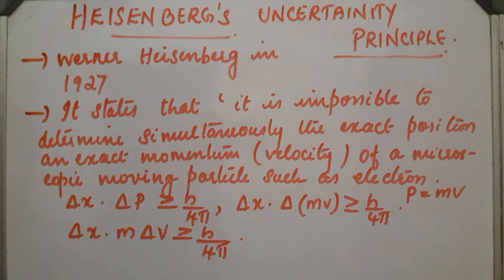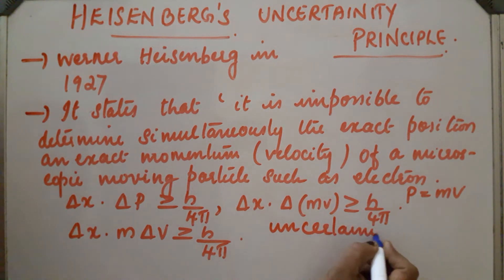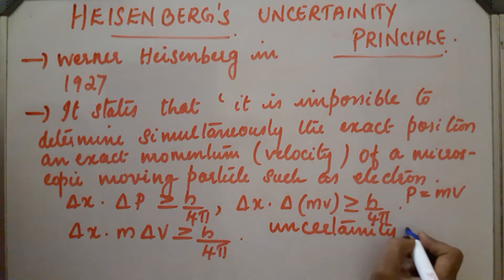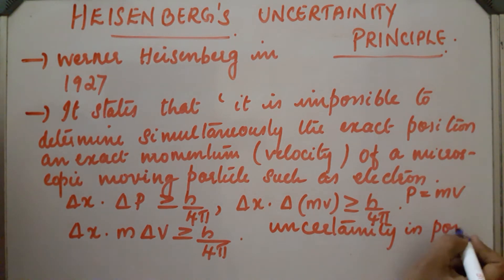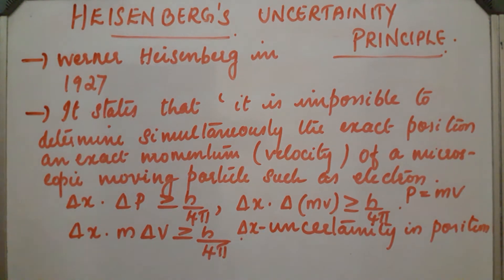Here, X and P are the position and momentum, and V is the velocity. Delta X represents uncertainty in position, Delta P is uncertainty in momentum, and Delta V is uncertainty in velocity.